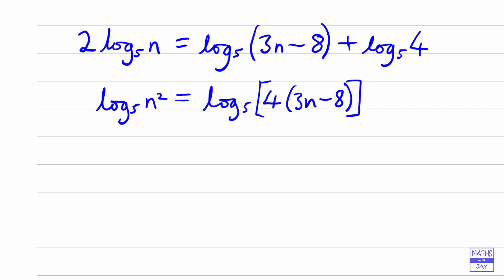So now we can get rid of the logs, because if log of n squared is a log of 4 times 3n minus 8, then n squared is equal to 4 times 3n minus 8. So that's the hard bit done. Now we want to rewrite this so that it's easy to solve and it's going to be a straightforward quadratic.